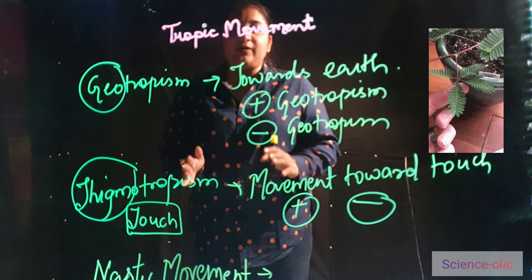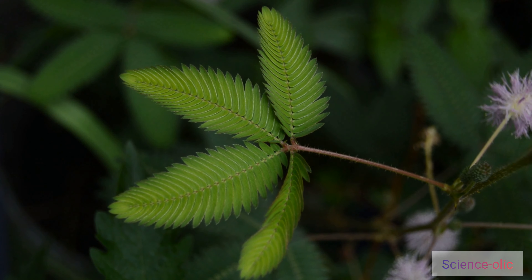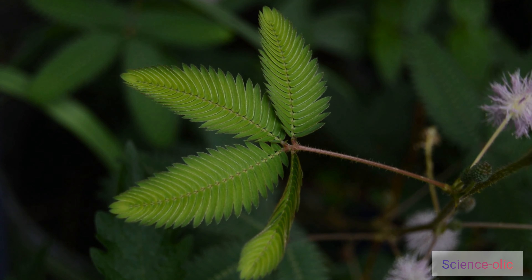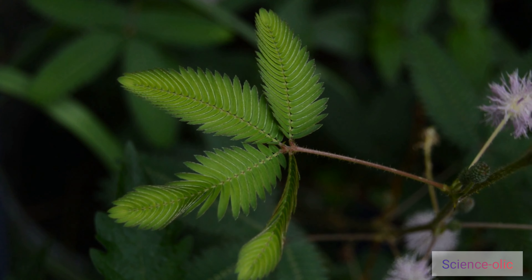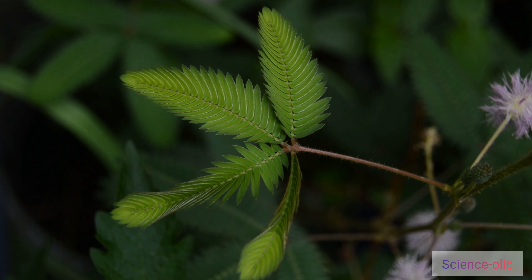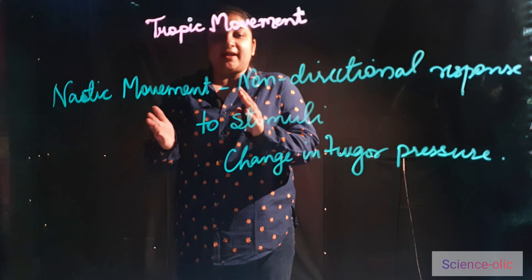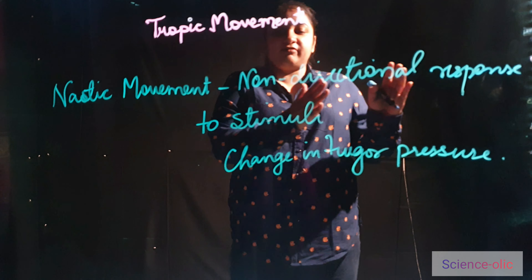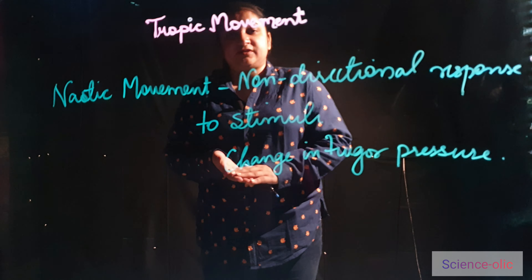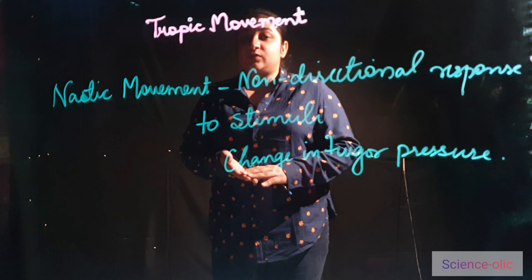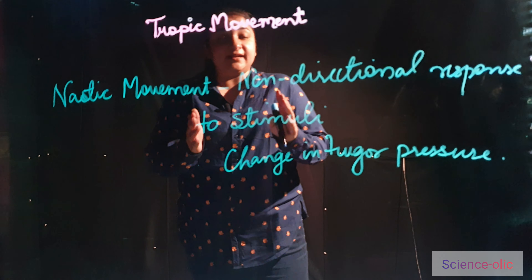The next very important topic is nastic movement. In the first video you are seeing that when we touch the plant it closes its leaves, and in another video you are seeing that a Venus flytrap is catching an insect inside. This is a non-directional response to stimuli — all other movements discussed were directional towards growth, but this is non-directional.